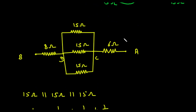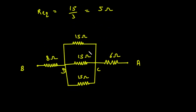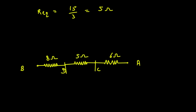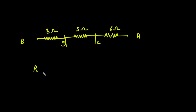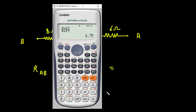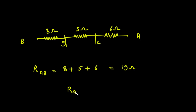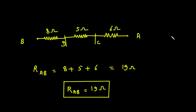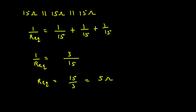Now we can redraw this network and replace these three resistances by a single resistance of 5 ohm. Now these remaining resistances are all connected in series. So we can write RAB = 8 + 5 + 6 = 19 ohm. Therefore RAB = 19 ohm. This is the final equivalent resistance between terminals A and B, and this is how we can solve these types of networks.